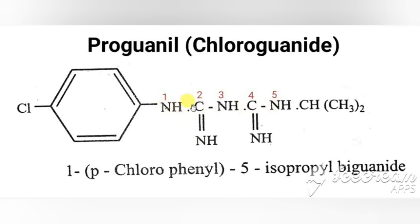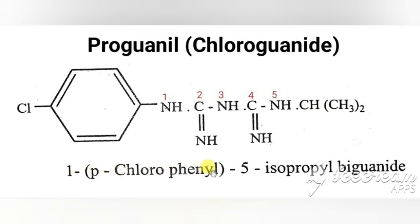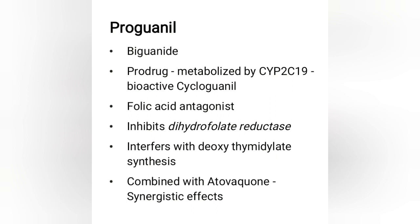Proguanil has two guanidine groups (NH2-C(=NH)-NH2), numbered 1 through 5. The parent structure is biguanide. At the first nitrogen, a para-chlorophenyl group is attached, and at the fifth nitrogen, an isopropyl group is attached. Therefore, the chemical name is 1-(para-chlorophenyl)-5-isopropyl biguanide.